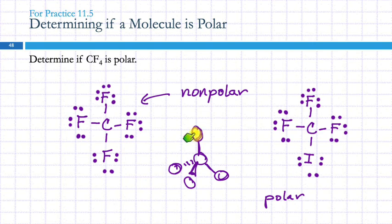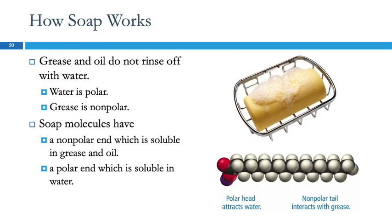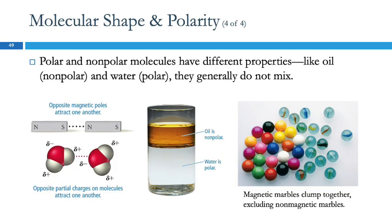If iodine is the odd atom out and is less electronegative than carbon, the vector for that bond actually points the other way. Those vectors do not add up to zero. The bottom line: lone pairs on the central atom and atoms being the same are the best criteria to use.